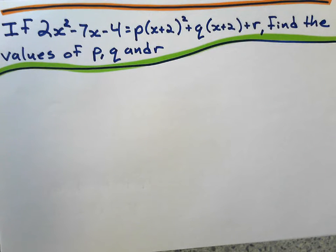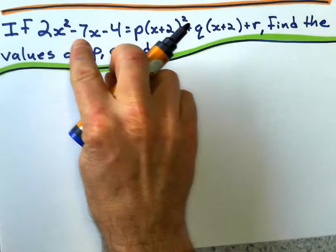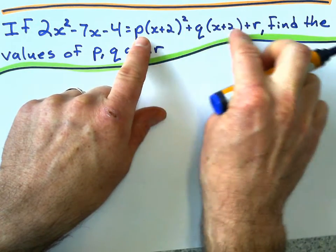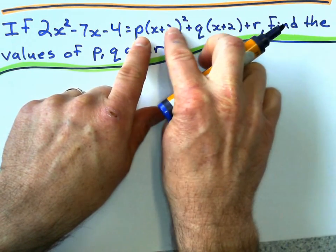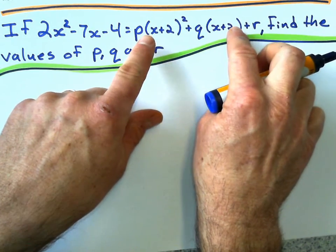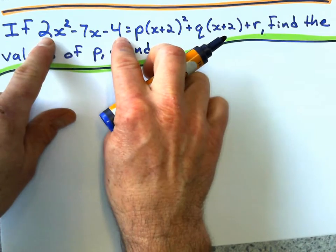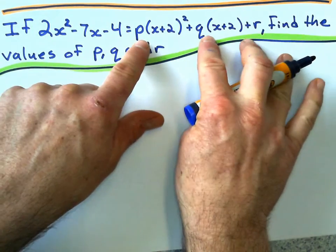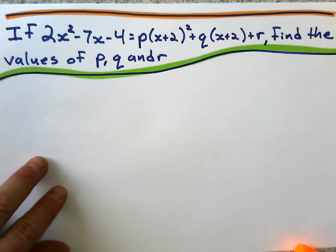All right, now that looks pretty daunting. So I think how I first tackled this one is I just looked at this over here and thought, well, maybe I can clean this expression up a little bit by expanding these brackets and collecting any like terms. And then I'm going to match it to this expression and slowly solve for P, Q, and R. So here's what I did.